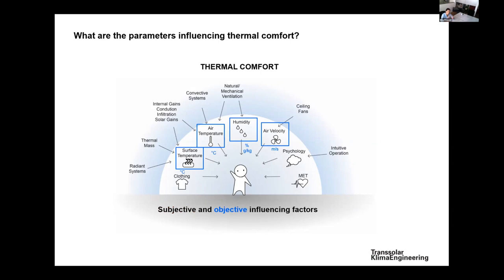Then you also have objective climate parameters: surface temperature, air temperature, humidity, and air speed. These four parameters have an objective impact on the way you feel and perceive your comfort. Two of these — air temperature and surface temperature — can be combined, and we will see later how and why, to make another metric called operative temperature.